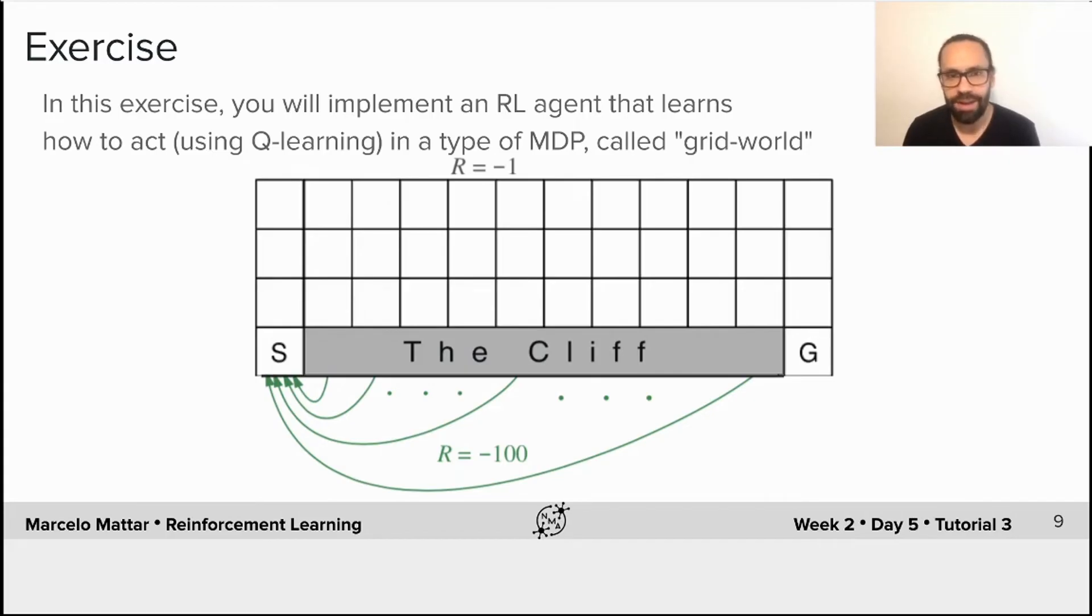But the caveat here is that the agent receives a reward of minus 100 if it moves into this gray area, which is the cliff. So it needs to get to the goal state while avoiding falling through the cliff.